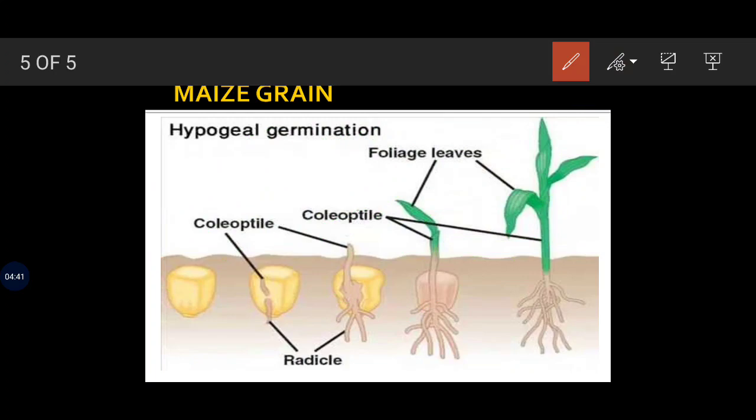That's all about the hypogeal germination of maize grain. With this we are now ending the pattern of germination topic. In the next class we are going to study about viviparous germination and the seedling - with this your chapter will be over.